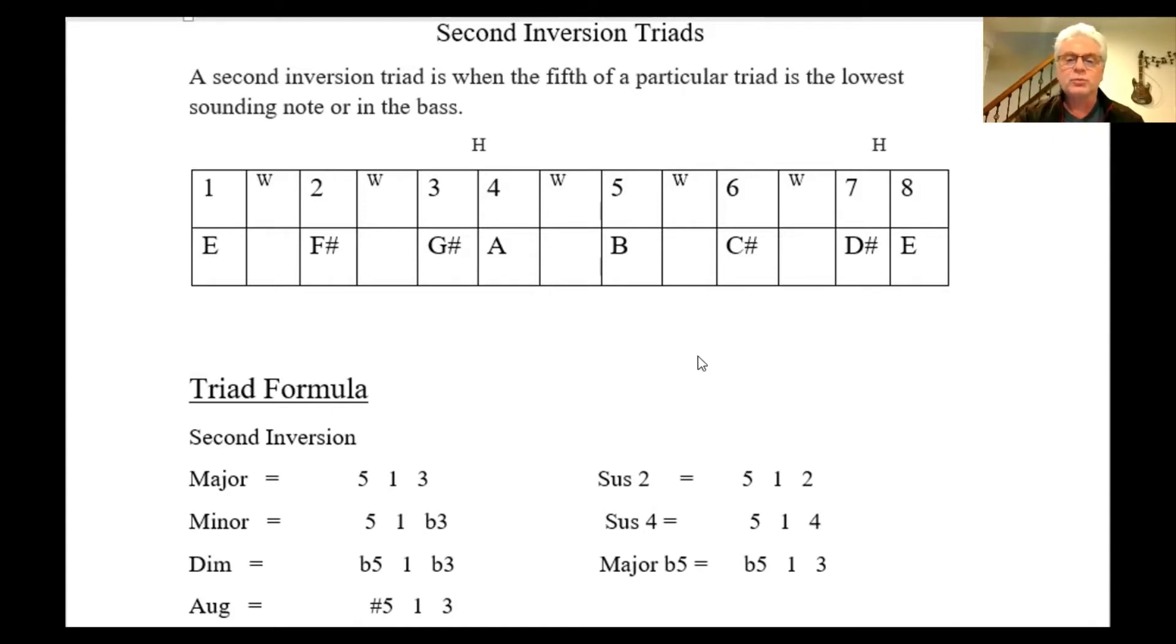Our E sus2 would be the five which would be B, the one which is E, and the two which is F sharp. Our sus4 is a five which is B, E which is one, and our four which is A.